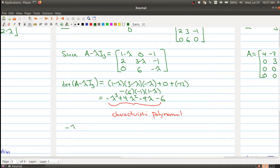So negative lambda cubed plus 4 lambda squared minus 9 lambda minus 6 equals 0. So this is the characteristic equation because we set it equal to 0.